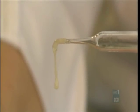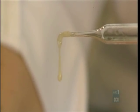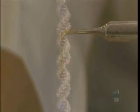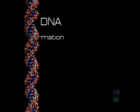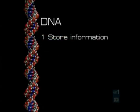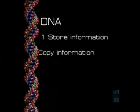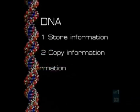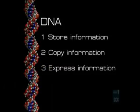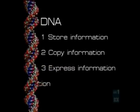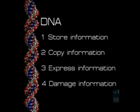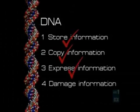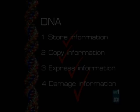This stringy stuff, which you can separate out from any living tissue in your own kitchen if you like, had to be responsible for four things if it was going to qualify as genetic. First, it had to be able to store a lot of information. Second, it had to be able to make copies of this information. Third, it somehow had to express this information to make an organism. And fourth, there needed to be some way of damaging this information — remember Oscar the dog? Could DNA do it? The answer is yes, yes, yes, and yes.